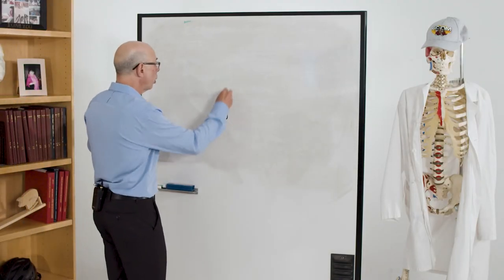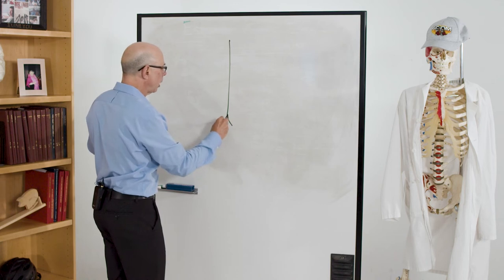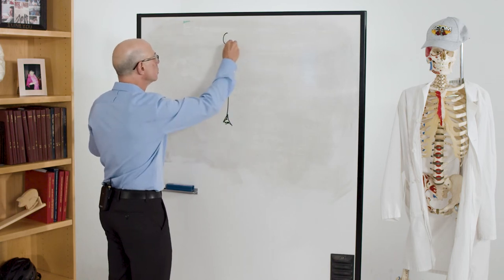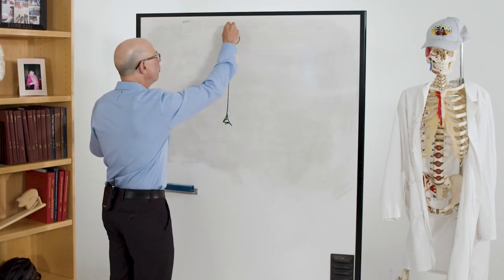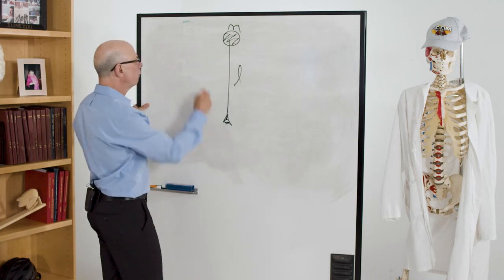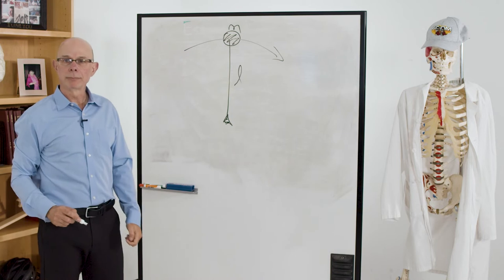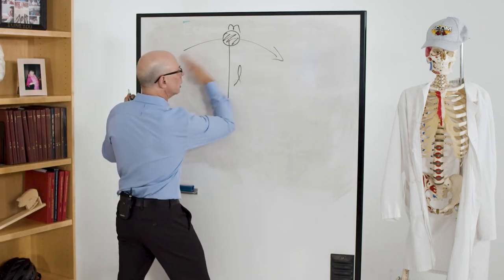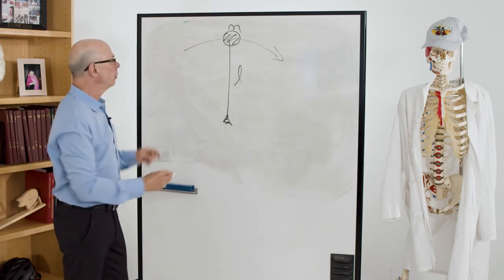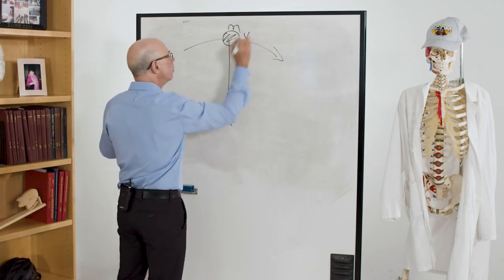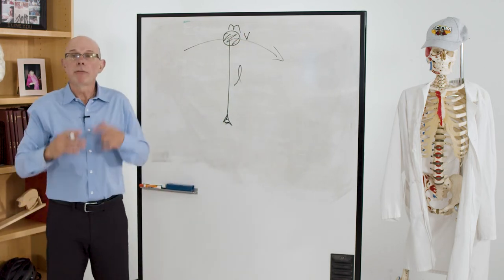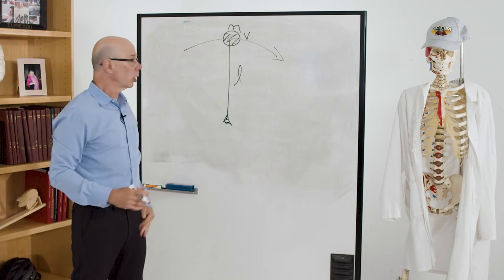If we think about, go back to our inverted pendulum model, we have a mass sitting on top of the leg, and it's moving in this direction during walking. So the inverted pendulum is rotating. There's going to be a certain speed, V, above which you'll take off from the ground.